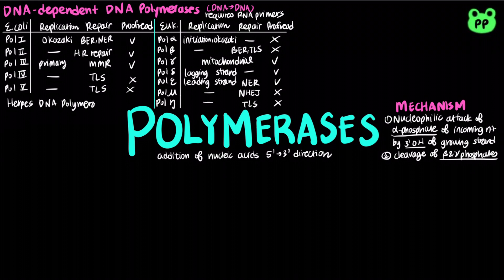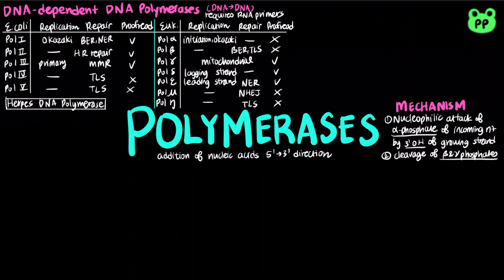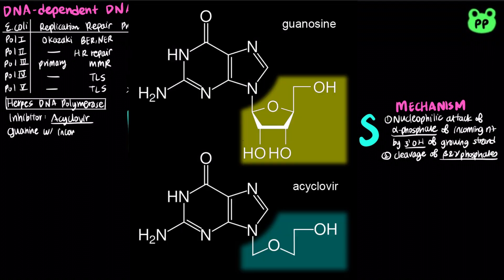Herpes virus is a DNA virus that contains a viral DNA polymerase. Herpes DNA polymerase is inhibited by acyclovir, which is guanine with an incomplete ribose ring. It functions as a chain terminator, since it lacks the 3 prime hydroxyl group as a nucleophile.